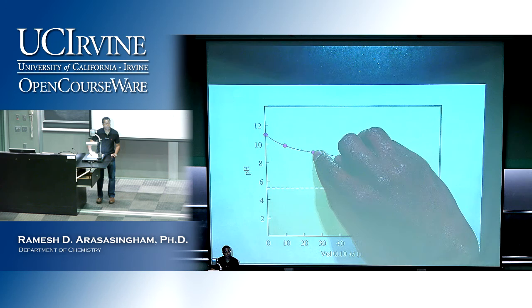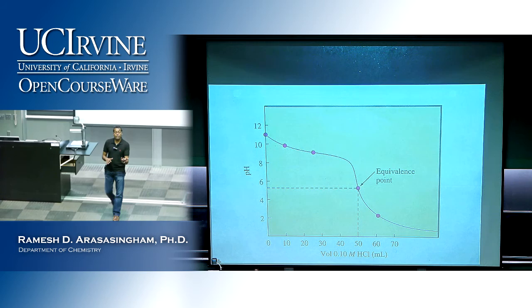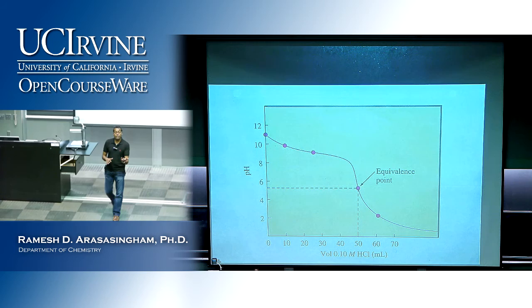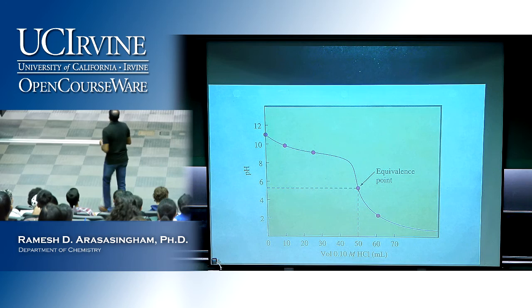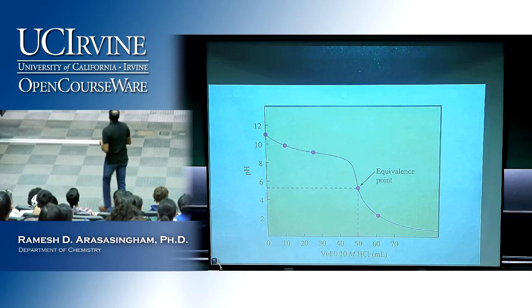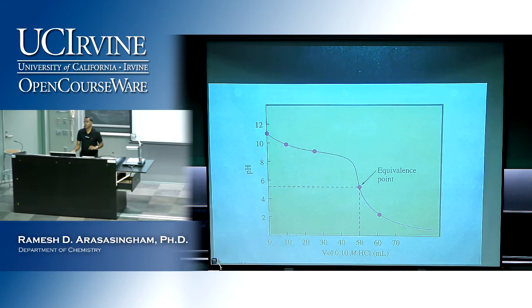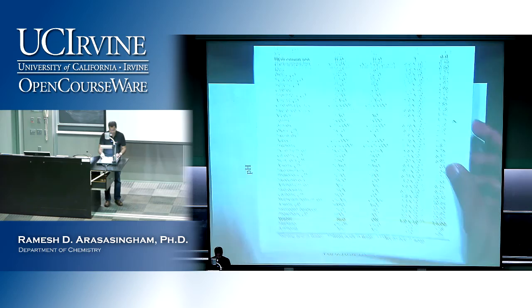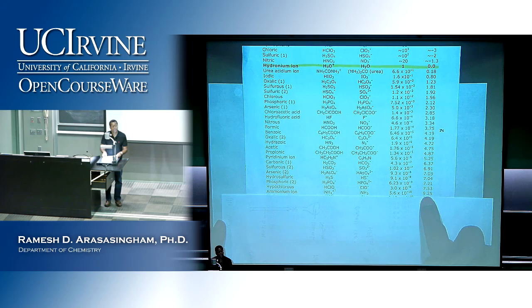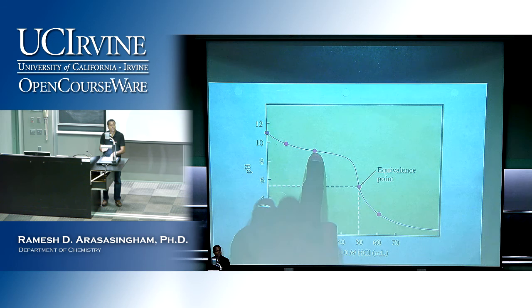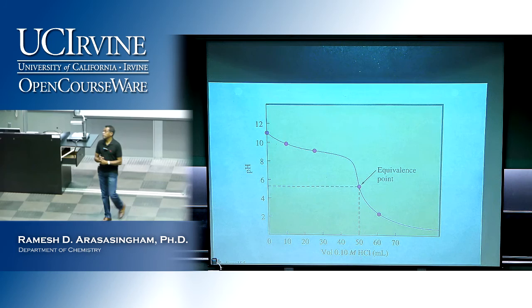Even though we have a base in solution, this gives us the point at which pH equals pKa — not pKb. Some students ask why we talk about Ka rather than Kb, but remember, pH always equals pKa according to the Henderson-Hasselbalch equation when concentrations of acid and base are the same. So here, if you look up the conjugate acid-base pair — ammonium and ammonia — you know pKa is 9.25, so the pH at the half-equivalence point is 9.25.